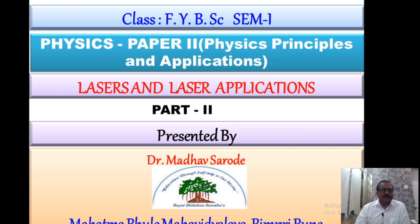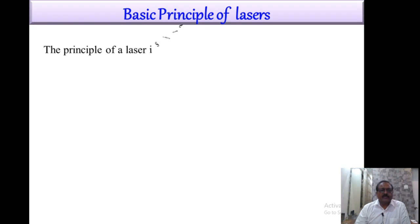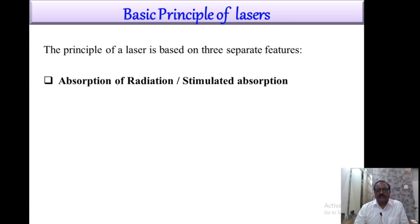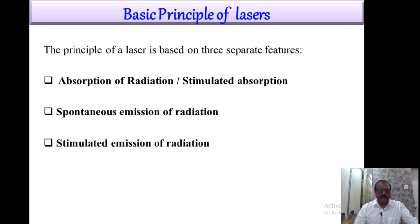In Part 1, we studied the basic principles of lasers. We know that there are three separate features: absorption of radiation, also known as stimulated absorption; spontaneous emission of radiation; and stimulated emission of radiation. In Part 1, we studied the first basic principle — absorption of radiation or stimulated absorption — which is the raising or pumping of atoms from a lower to a higher energy level through optical pumping. This transition is known as induced absorption, stimulated absorption, or simply absorption.